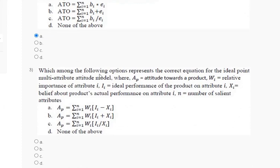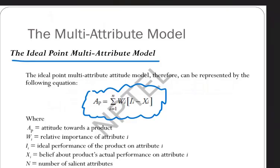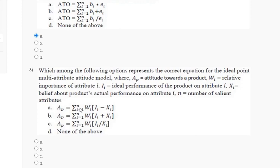Question number 3: which among the following options represents the correct equation for the ideal point multi-attribute model? The explanation is: the ideal point multi-attribute model is AP = summation from i=1 to N of W_i × |I_i − X_i|. So the correct answer for question number 3 is option number A.